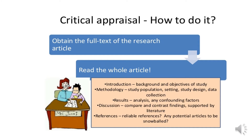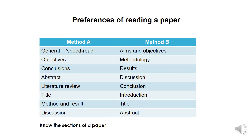How do you do critical appraisal? Number one, you have to obtain the full text of the research article and read the whole article. There are preferences for reading a paper. You either use method A whereby you do a speed read and jump to objectives, conclusion, abstract, literature review, title, method and results, and finally discussion. Or method B whereby you go from aims and objectives to the methodology, results, discussion, conclusion, introduction, title and abstract.